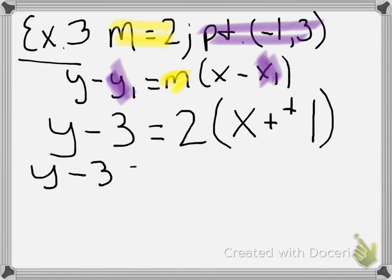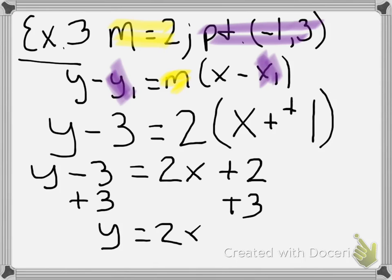First move we're going to do is we're going to distribute our two on the right-hand side. So we'll get y minus three equals 2x plus 2. And then from there, we isolate our y. The next step is to add three to both sides. And then in slope-intercept form, our line is y equals 2x plus 5.